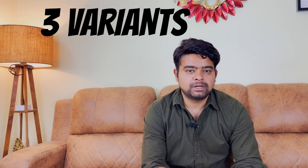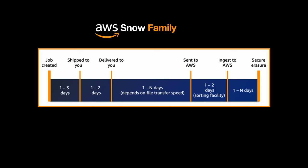The Snow Family comes in three variants — we'll cover those shortly — but first let's see how they work. You create an AWS transfer job, a physical device is prepared and shipped to you within one to three days. When it arrives at your on-premises facility, you prepare and load the data, which takes however many days your data requires. The device is then physically shipped back to the AWS facility, ingested to your chosen storage type, and securely erased.